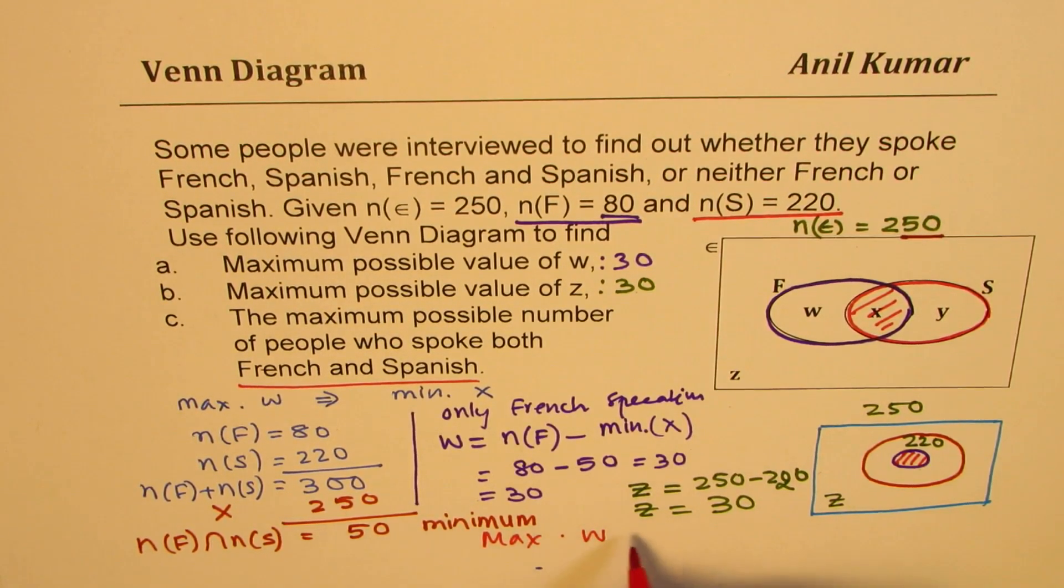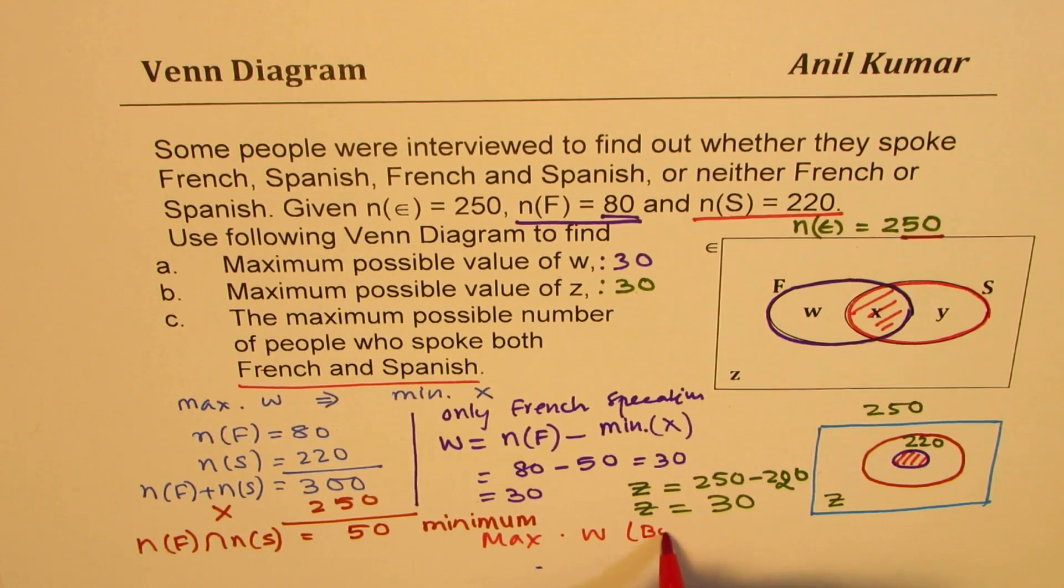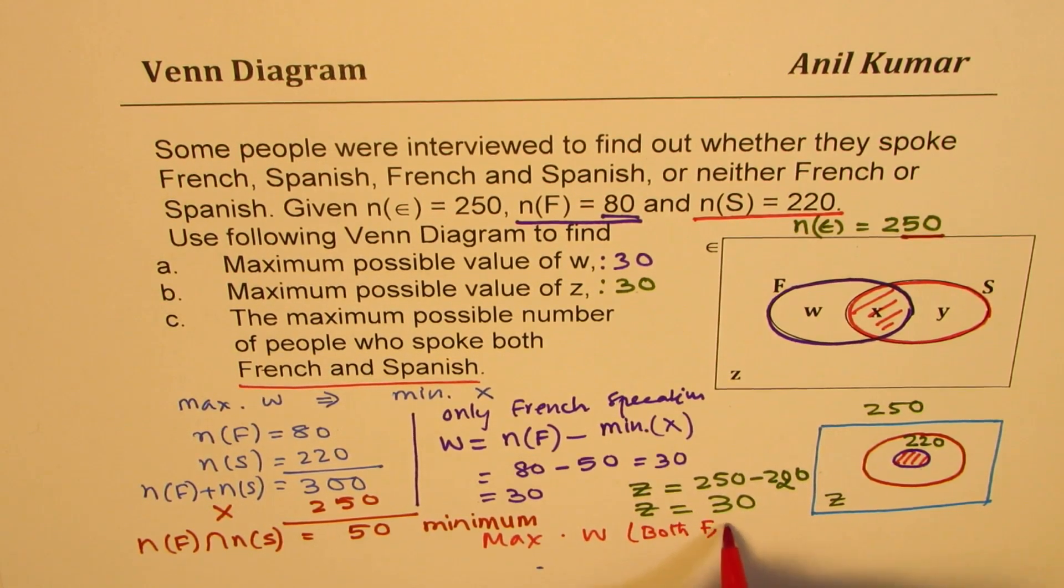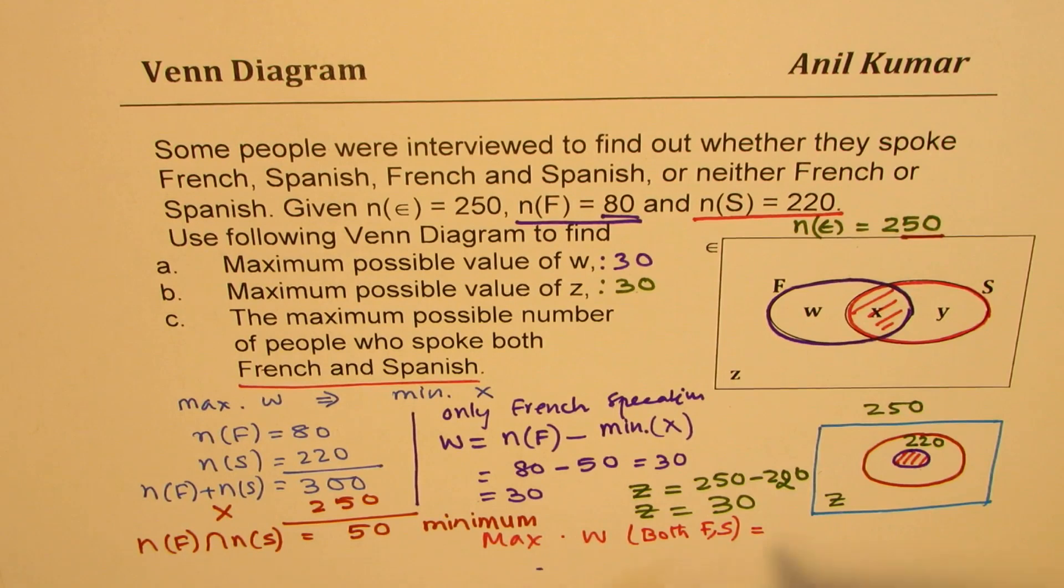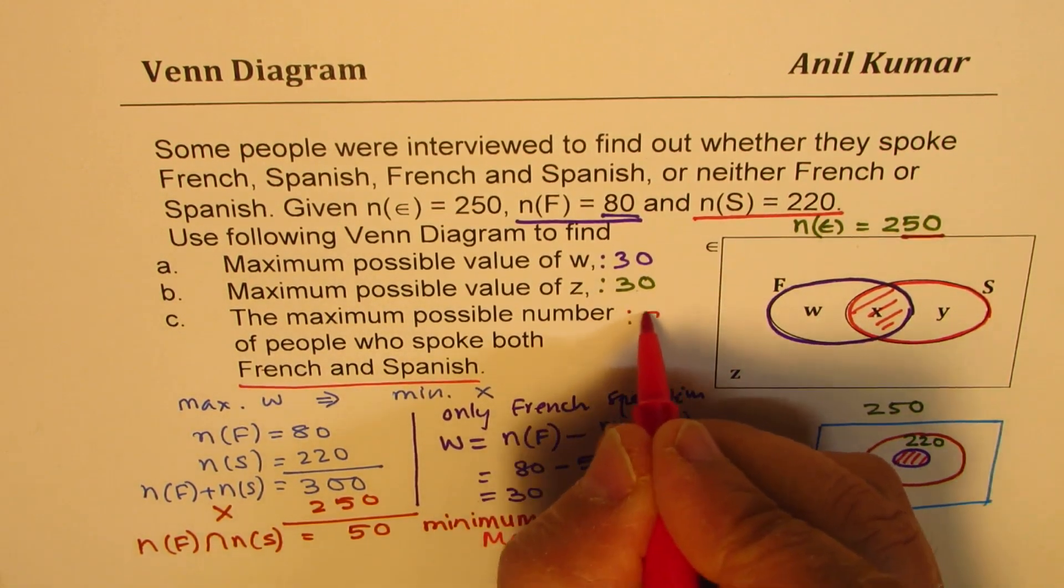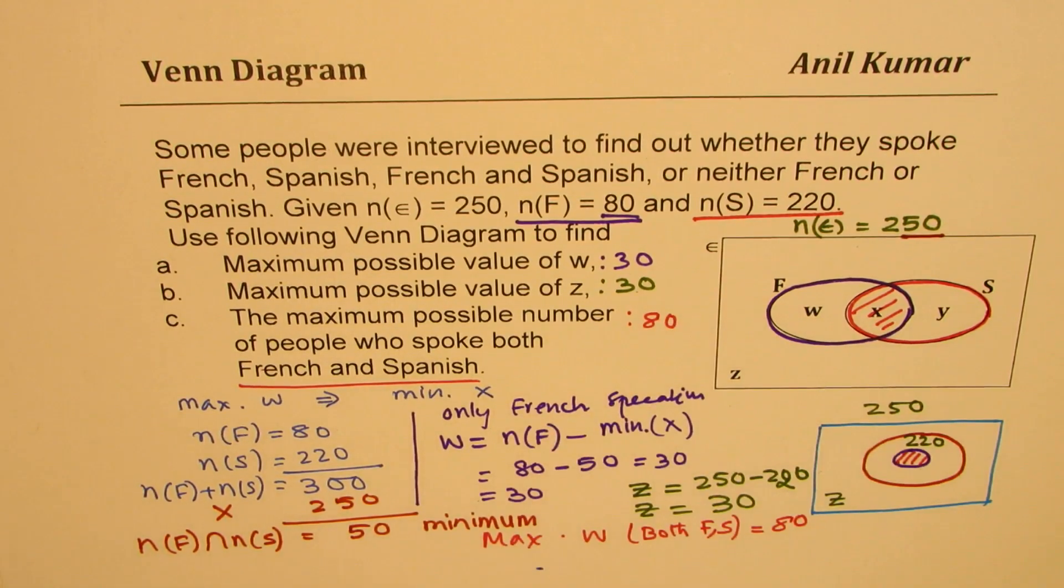So the maximum value of X, that means both French and Spanish, is all speaking French are also speaking Spanish. So that should be 80. Perfect. So that is how we could actually answer this question. So we get for part C, the answer is 80 persons. So I hope that helps.